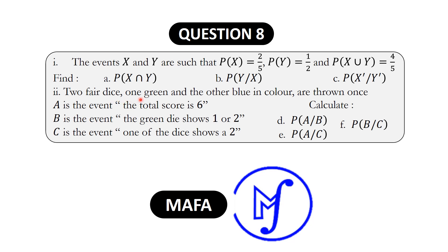Two fair dice, one green and the other blue in color, are thrown once. A is the event the total score is 6. B is the event the green die shows 1 or 2. C is the event one of the dice shows a 2. Calculate D, probability of A given B; E, probability of A given C; and F, probability of B given C.